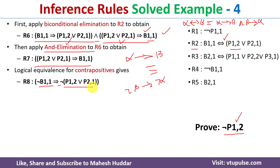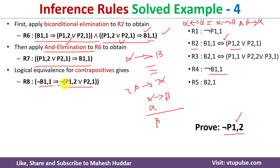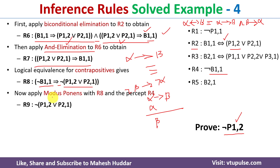Now we have negation of B11 implies negation of (P12 or P21), and negation of B11 is present in R4. We can apply modus ponens — alpha implies beta, plus alpha, gives beta. So applying modus ponens between R8 and R4, we get negation of (P12 or P21) as the result.